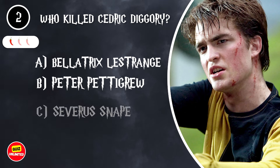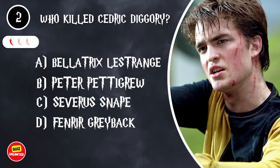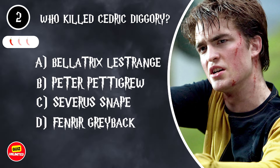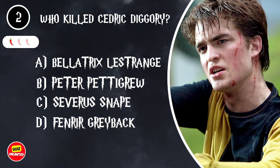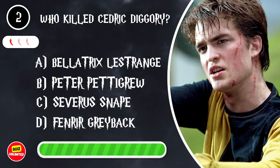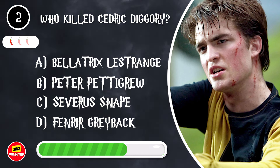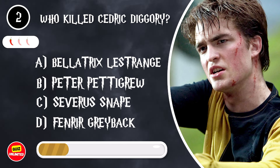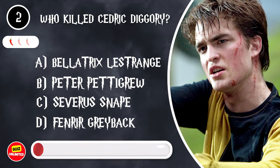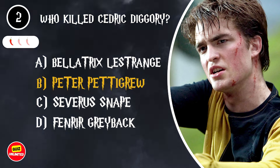Who killed Cedric Diggory? A. Bellatrix Lestrange. B. Peter Pettigrew. C. Severus Snape. D. Fenrir Greyback. It's B. Peter Pettigrew.